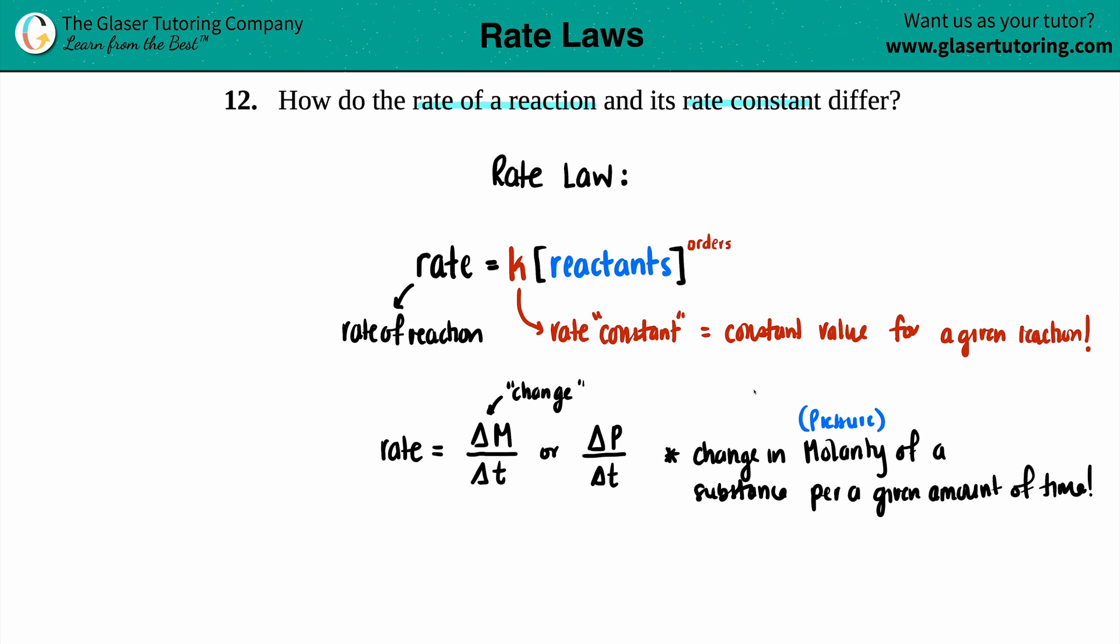Now these constant values, these aren't like your R values that you have to memorize, right, the 8.314 or the 0.0821. These constant values will change for different reactions, but if you're in the same question with a given reaction, for that whole question the rate constant will be exactly that - it's going to be constant.